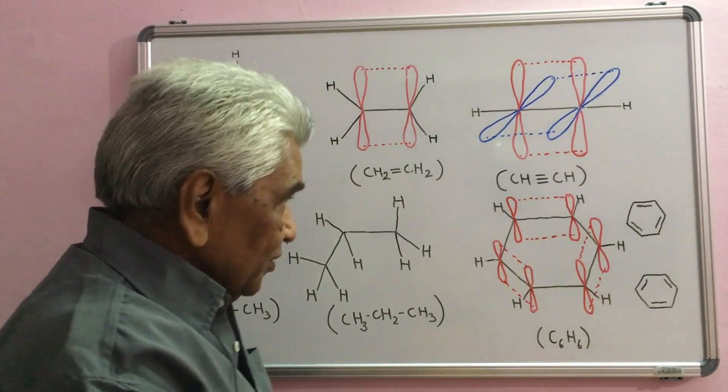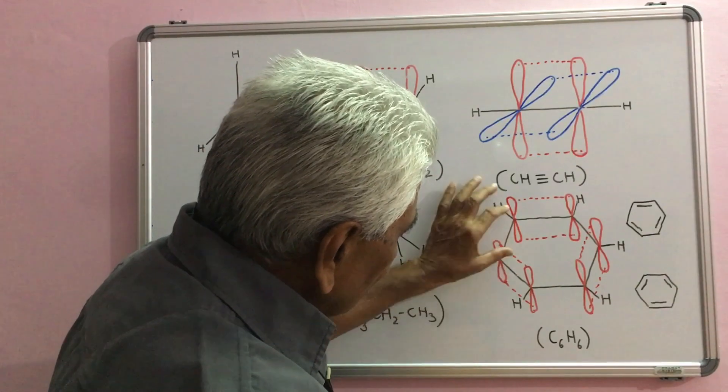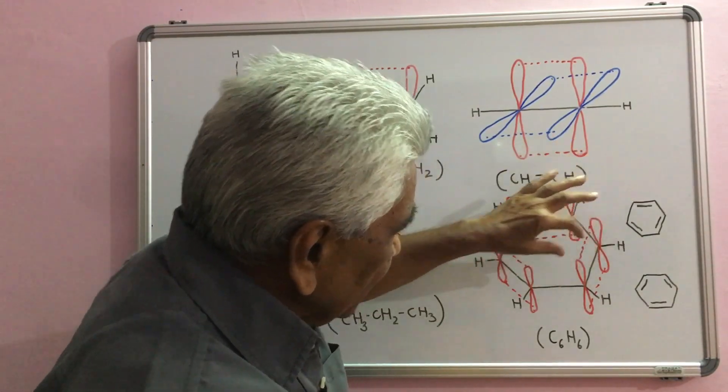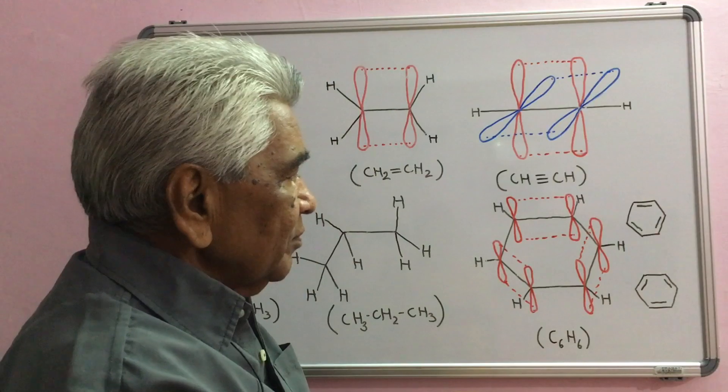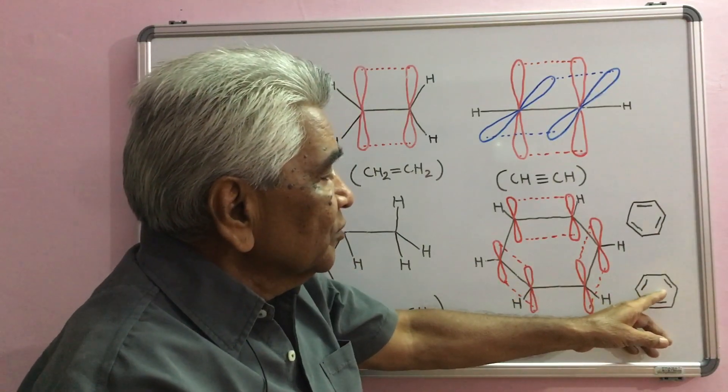Another possibility: that this may have overlapped with this, this overlap and this overlap. Alternate double bonds are formed in this fashion.